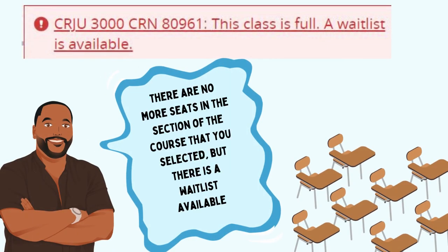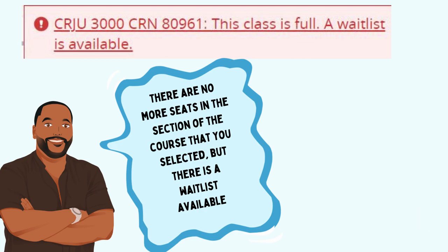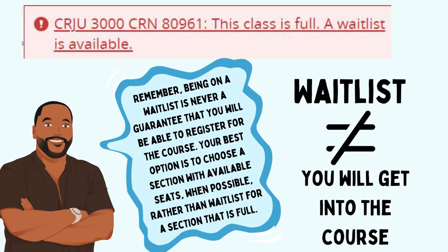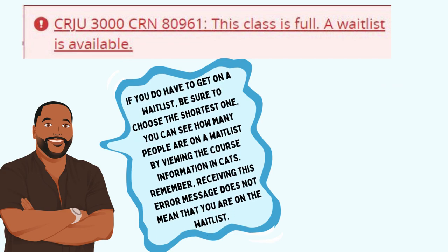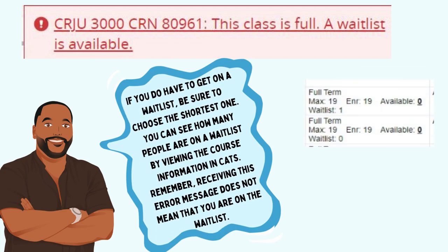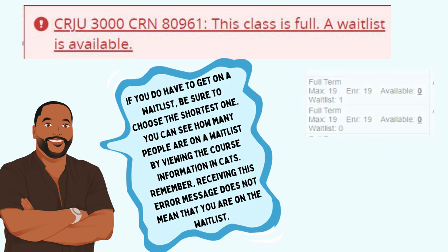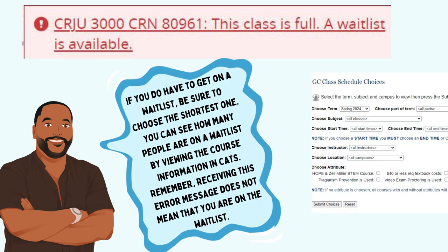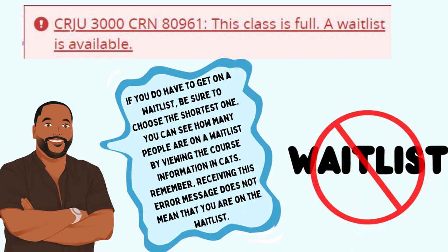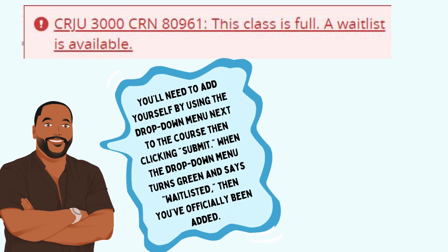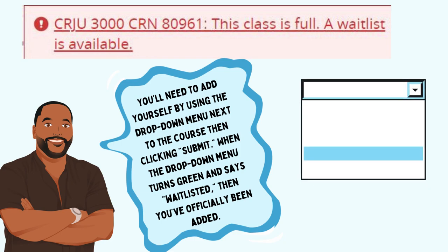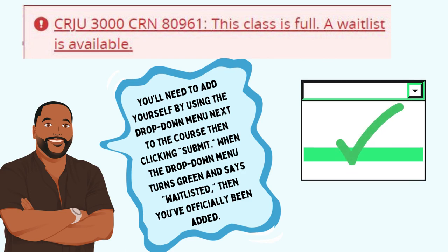This error means there are no more seats in the section you selected, but there is a waitlist available. Remember, being on a waitlist is never a guarantee that you'll be able to register for the course. Your best option is to choose a section with available seats when possible. If you do have to get on a waitlist, choose the shortest one — you can see how many people are on a waitlist by viewing the course information in CATS. Receiving this error does not mean you are on the waitlist; you'll need to add yourself using the dropdown menu next to the course and clicking submit. When the dropdown menu turns green and says 'waitlisted,' you've officially been added.